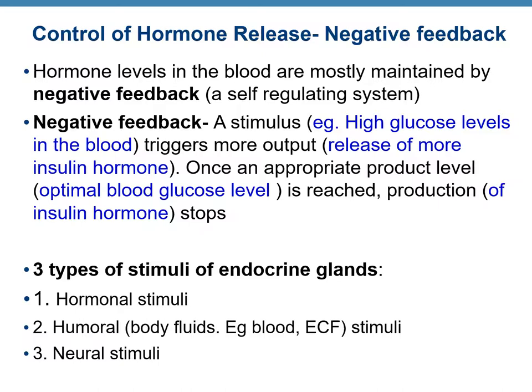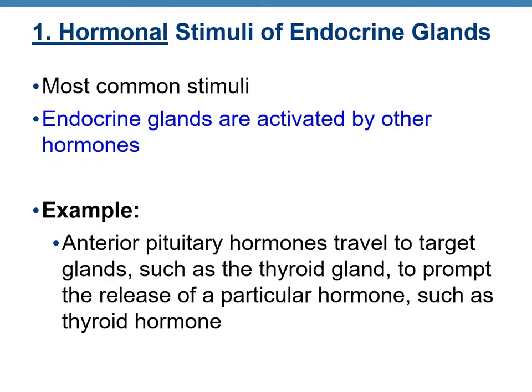There are three types of stimuli or triggers of endocrine glands. The first is hormonal stimuli, the second is humoral (meaning body fluids, such as blood or interstitial fluid), and the third is neural stimuli. Hormonal stimulus is the most common type — endocrine glands are usually activated by hormones from other endocrine glands. For example, hormones from the anterior pituitary go to target organs such as the thyroid gland and stimulate it to produce thyroxine or triiodothyronine.